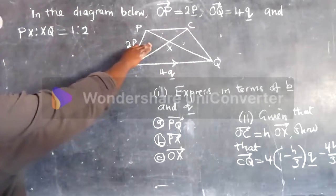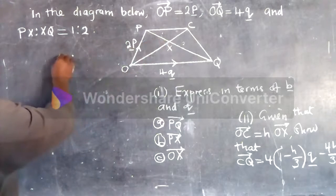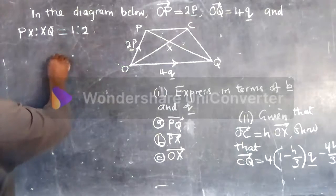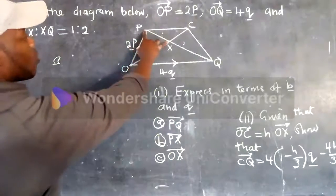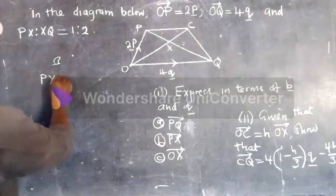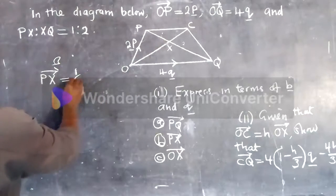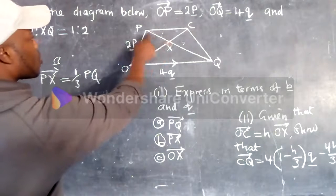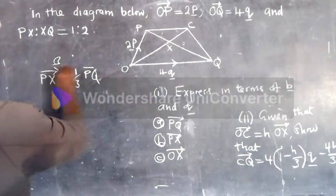So now, for you to find the ratio, what we do is we add this, this plus this, it's three. So if you want to find the vector over here, it will be px, vector px, px is equal to one-third over pq. So one-third over pq. This is the vector over here.